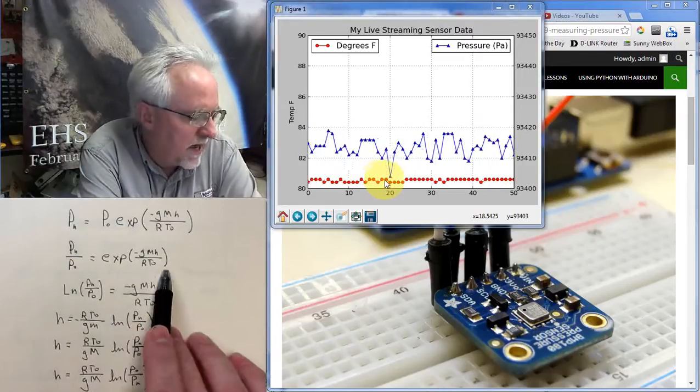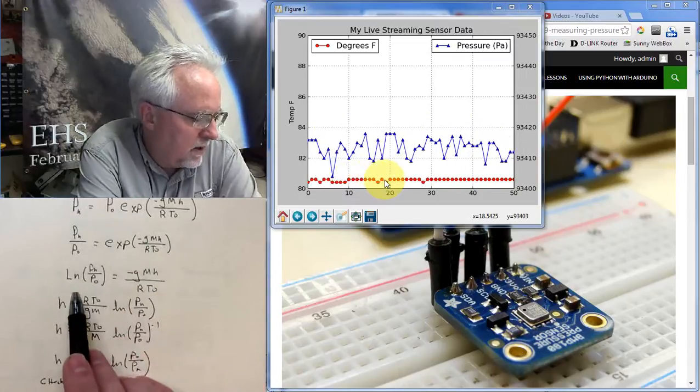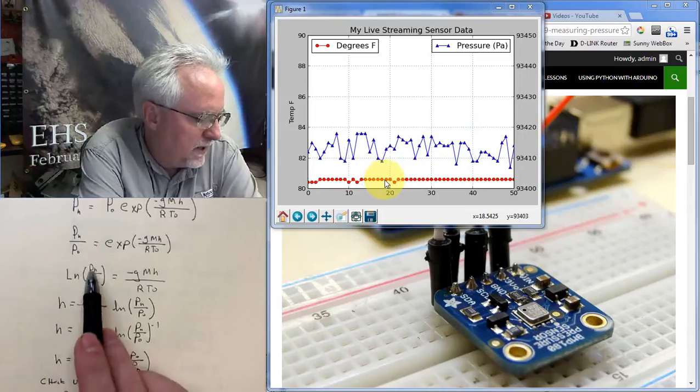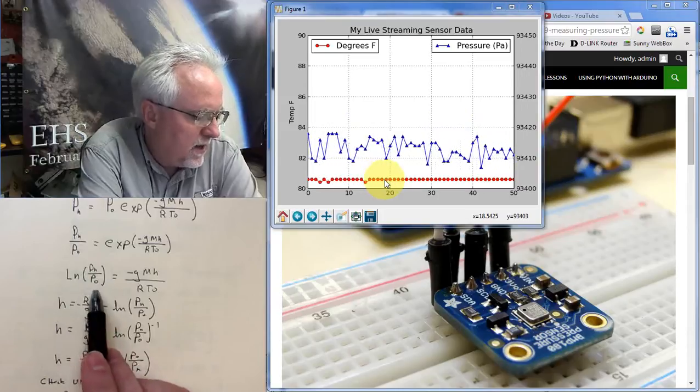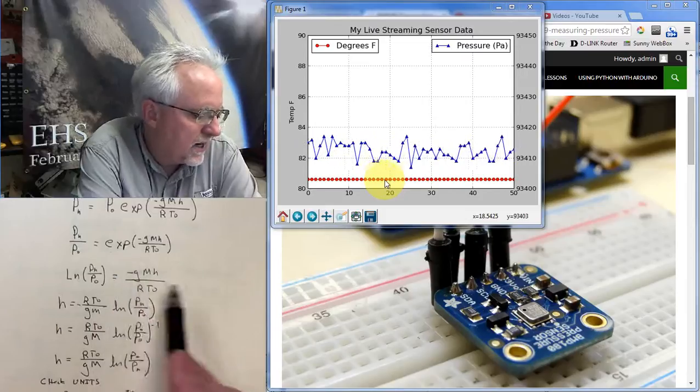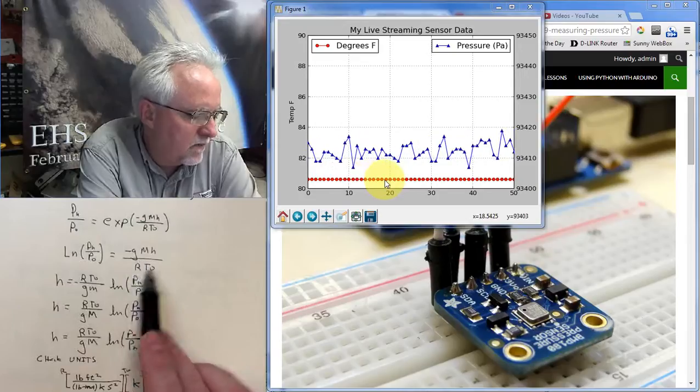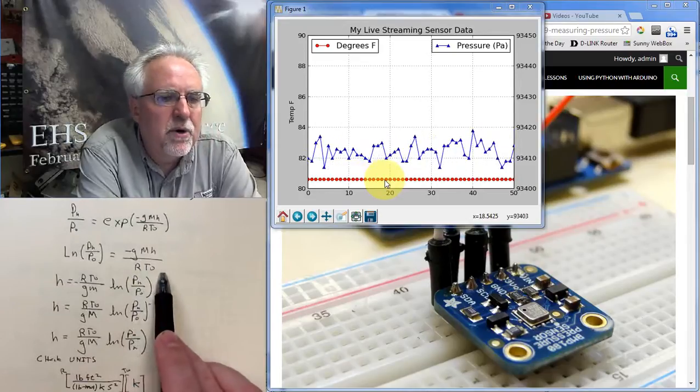But if I take the log of this side, I have to take the log of this side. So I have the natural log of this side, natural log of pH over p0, is equal to the natural log of this side, which neutralizes that exponent, and I just ended up with minus gmh over RT0. I want to solve for H.